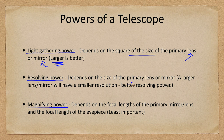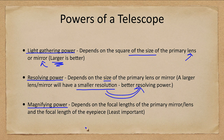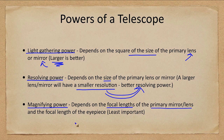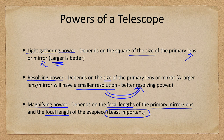The resolving power also depends on the size, but not on the square — just on the size of the primary lens or mirror. A larger lens or mirror will have a smaller resolution, which is good, because that means better resolving power — you can see more closely separated objects. Finally, magnifying power does not depend on the sizes of the mirrors but depends on their focal lengths — the focal length of the primary mirror or lens and the focal length of the eyepiece. This is the least important of the three powers, so if you're buying a telescope somewhere and it's emphasizing magnification, that's usually the least important thing.